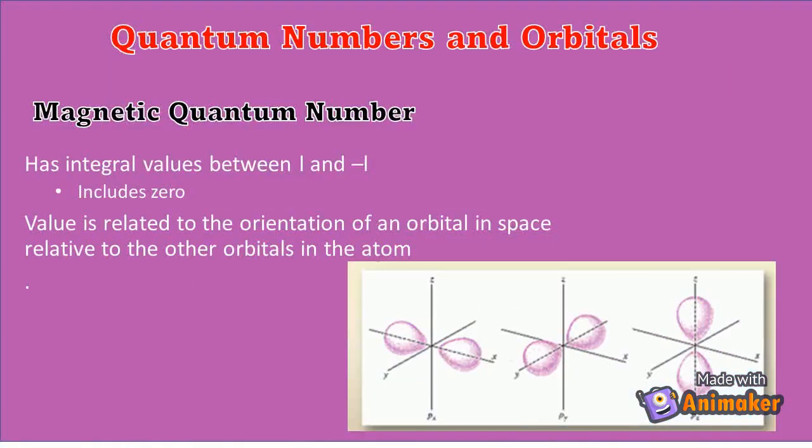The third one is magnetic quantum number. It describes the orientation of the orbital around the nucleus.